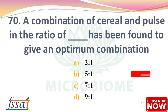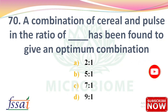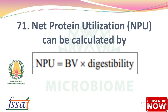Next: A combination of cereal and pulse in the ratio of dash has been found to give an optimum combination — options: 2:1, 5:1, 7:1, 9:1. The right answer is option B, 5 is to 1. Next: Net Protein Utilization (NPU) can be calculated by: NPU = Biological Value × Digestibility.